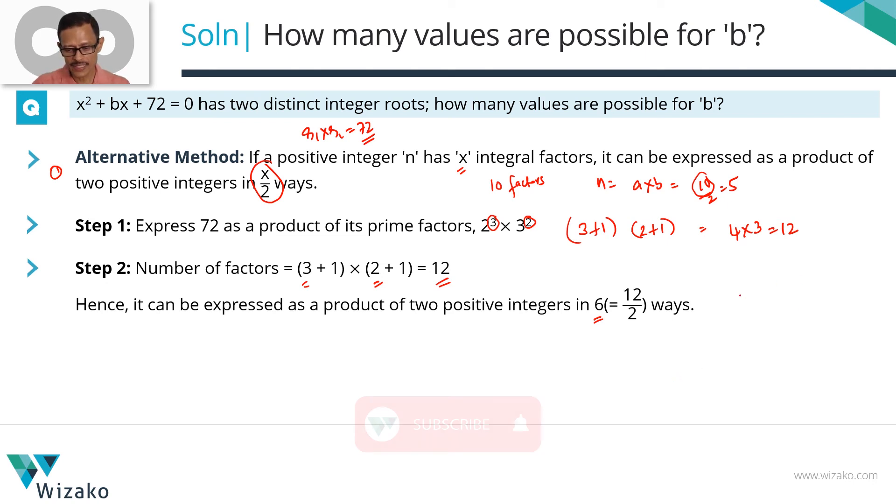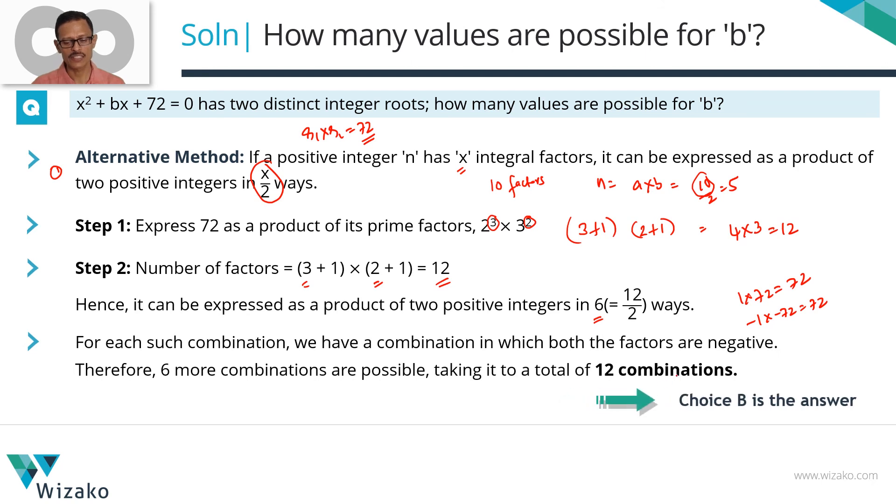Now we know that for every 1 times 72, which is 72, there is a minus 1 times minus 72, which is also 72. So we have 6 ways where the 2 parts are positive. There will be 6 more ways where both the roots are negative. So 6 plus 6, that makes it a total of 12. If you knew this idea about number of ways of expressing a number as a product of 2 factors, then the listing down that we did in the last method can be completely eliminated and you can get to this answer in about 20 seconds. The first part where we deduce that b equals minus of r1 plus r2 is probably another 20 seconds. So this question, if you knew these 2 parts, should be a less than a minute question. Choice B is the correct answer.